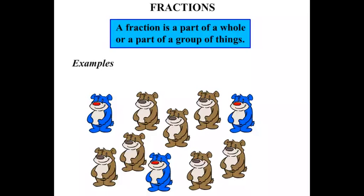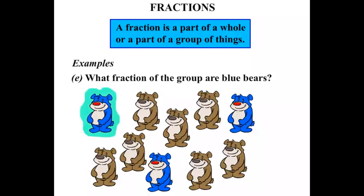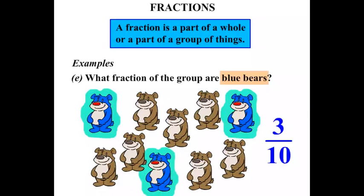And now our final example. A lot of bears here, a few different colored ones. The question is what fraction of the group are blue bears? Let's count out how many bears we've got to start with. 1, 2, 3, 4, 5, 6, 7, 8, 9, 10. We've got 10 bears. So we're going to write over 10, it's out of 10. Now we're interested in the blue bears. How many have we got there? 1, 2, 3. So the fraction is 3 over 10, and we can say that as 3 tenths.